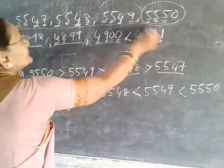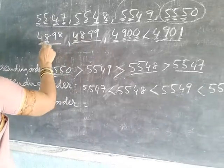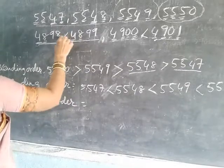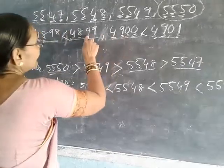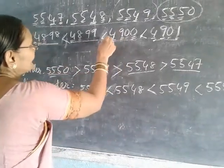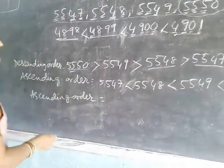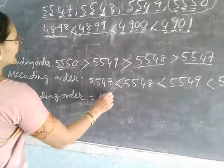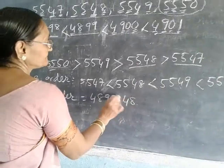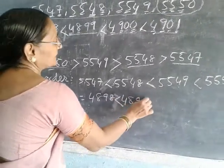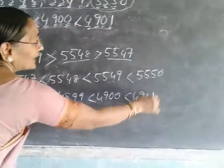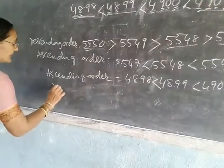Out of these, four thousand eight hundred and ninety-eight and four thousand eight hundred and ninety-nine — ninety-nine is greater than ninety-eight. And four thousand eight hundred and ninety-nine is less than four thousand nine hundred. So this way, first you write ascending order. Which one is smaller? Four thousand eight hundred and ninety-eight is smaller, then four thousand eight hundred and ninety-nine, then four thousand nine hundred, then four thousand nine hundred and one. This is the ascending order.